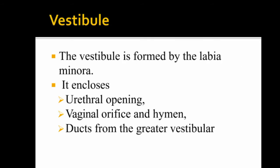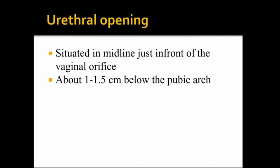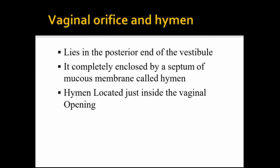The vestibule is in front of the vaginal orifice. It contains ducts from the greater vestibular glands. The urethral opening is located 1 to 1.5 cm above the pubic arch. The vaginal orifice is at the posterior end of the vestibule and is enclosed by a septum of mucous membrane called the hymen, located at the vaginal opening.